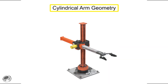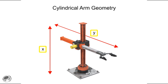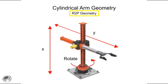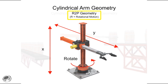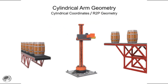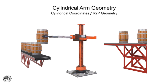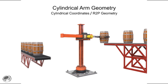Cylindrical arm geometry robots move linearly in two directions and rotate in one other. Since this type of robotic arm moves in two separate prismatic or linear directions and rotates in one direction, it's given the designation of R2P, where the R stands for rotational. This type of robotic arm is most often used in machine tending, assembly, material handling, and palletizing operations.